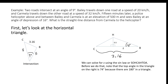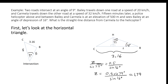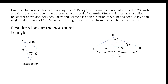We now solve for side length Z. This triangle has a 90 degree angle, a 16 degree angle, and therefore a 74 degree angle. Setting up the sine law: Z over sine 74 degrees equals 0.5 over sine 16 degrees. Solving, Z is roughly equal to 1.74 kilometers. That means the horizontal distance from directly below the helicopter out to Bailey is about 1.74 kilometers. So W must equal 3.16 minus 1.74, which is about 1.42 kilometers.